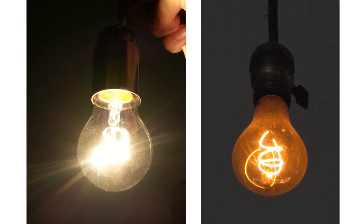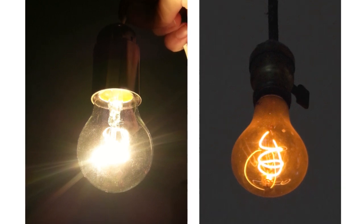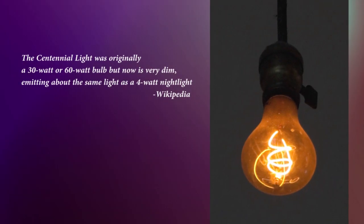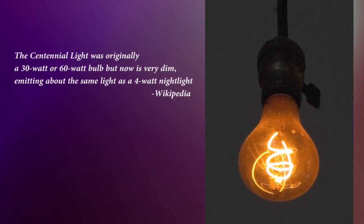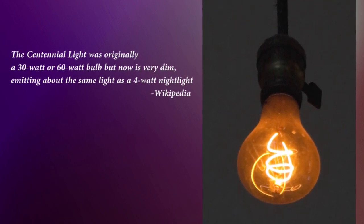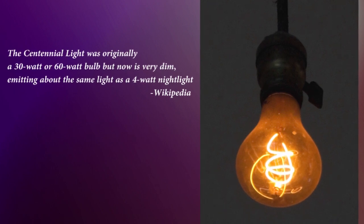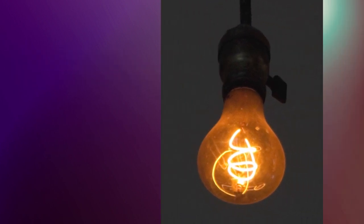The most obvious thing you can see is the brightness, and here is a quote about it from Wikipedia. The Centennial light was originally a 30W to 60W bulb, but now is very dim, emitting about the same light as a 4W night light. And that is very important.